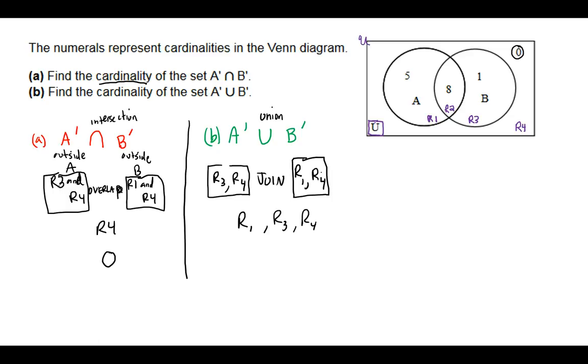Region 1 has 5 in it, and region 3 has 1 in it. Region 4 happens to have none in it. The answer would be the cardinality of those three together is 6. So, here's your answer to part A, and here is your answer to part B.